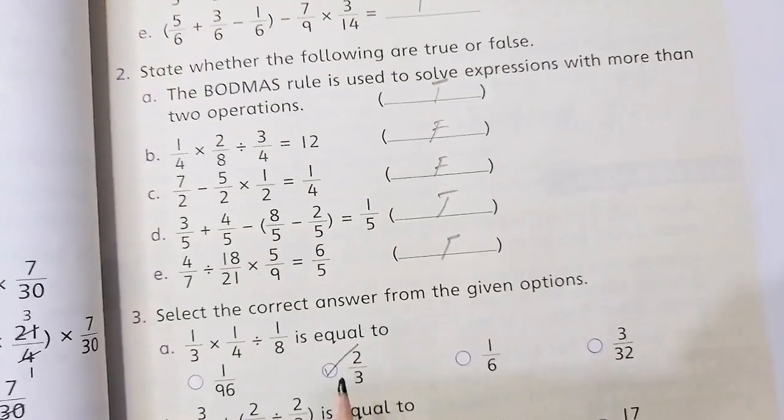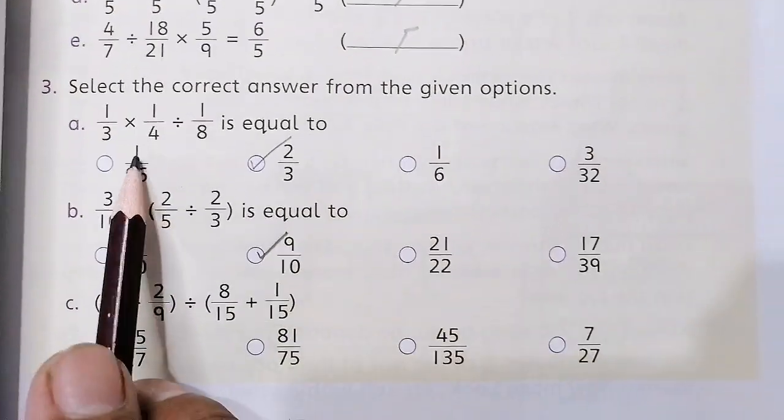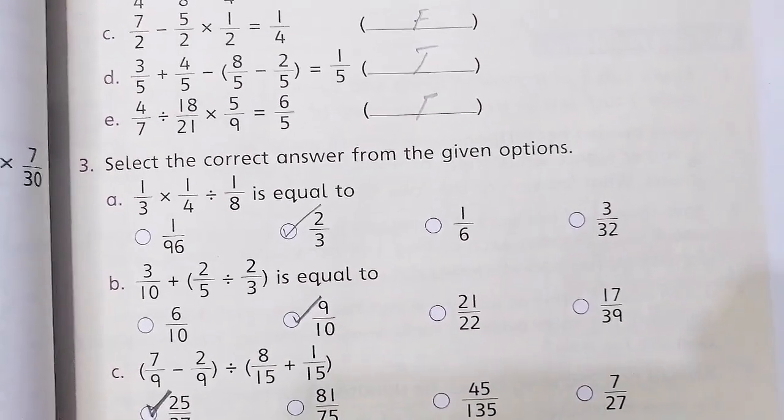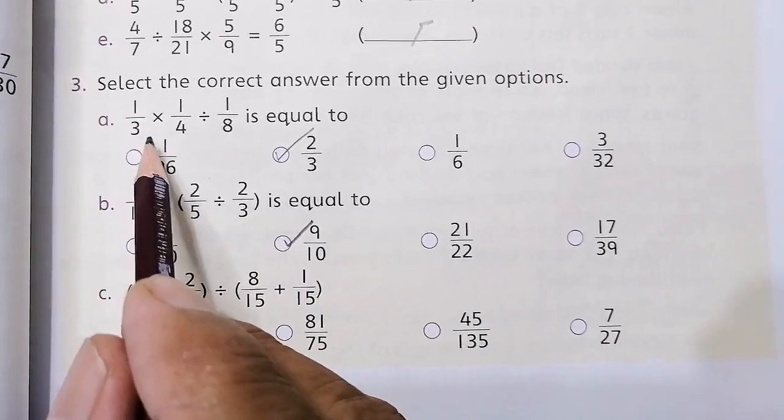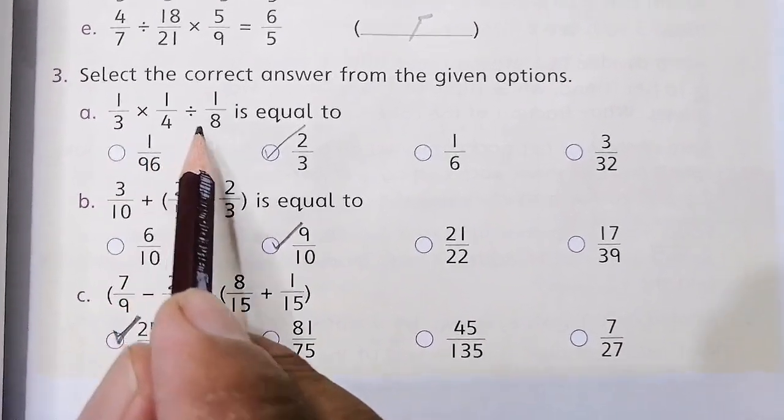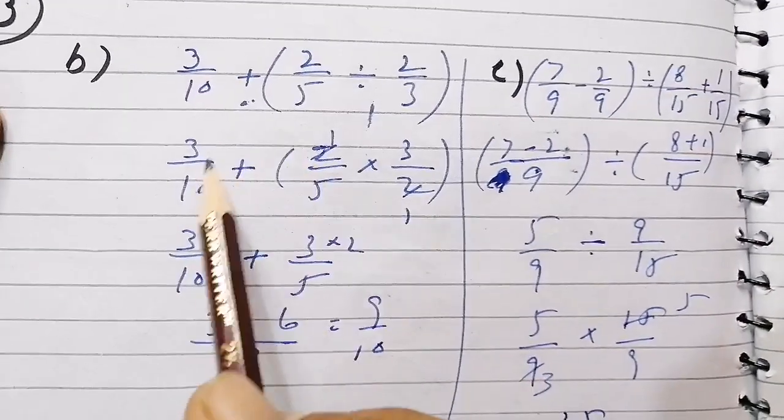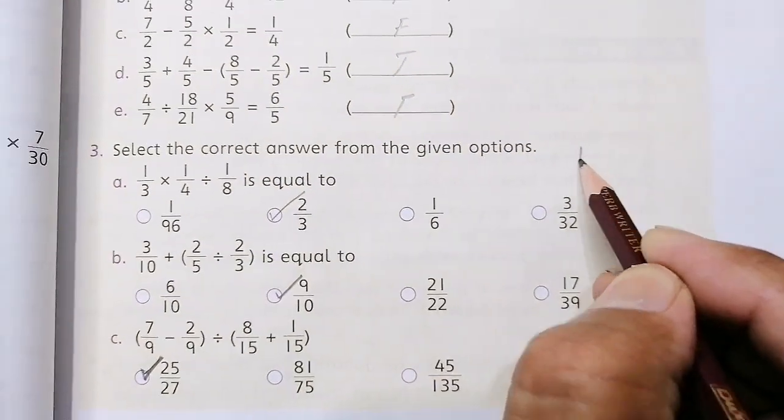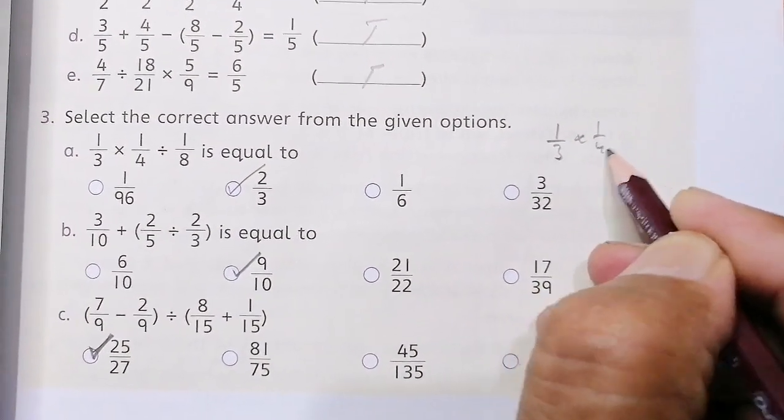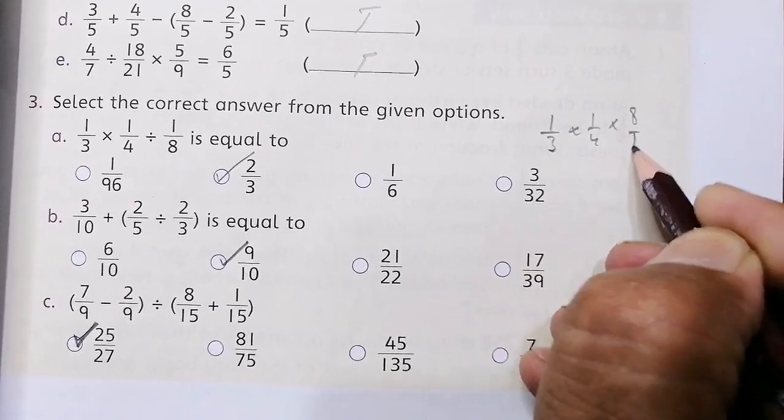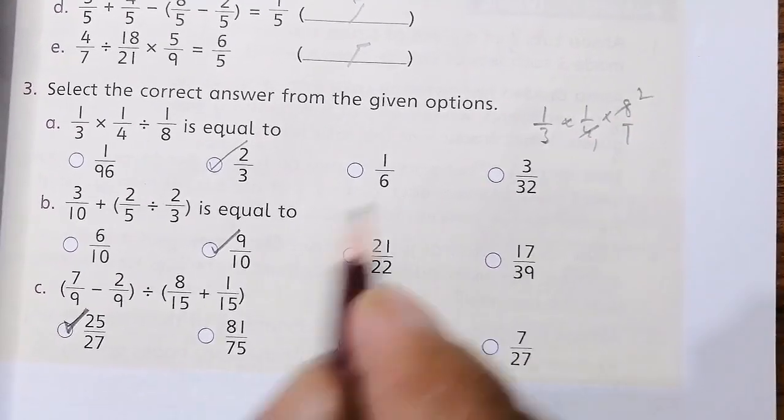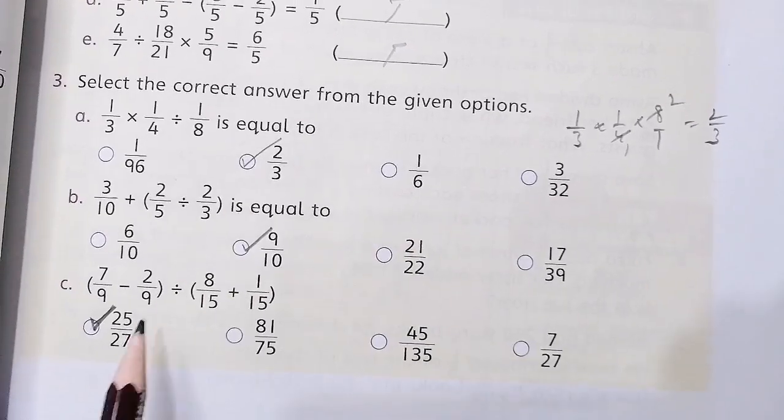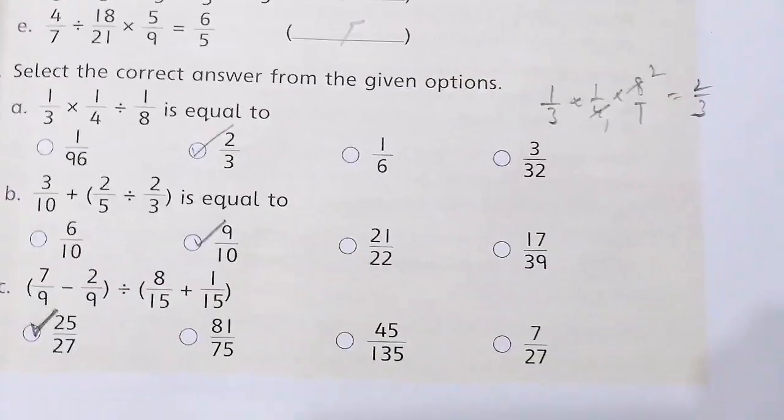Now you have to select the correct option. 1 over 3 multiply 1 over 4 divided by 1 over 8. So we have to solve it: 1 over 3 multiply 1 over 4 multiply 8 over 1, 4 into 1 is 4, 4 into 2 is 8, so the answer is 2 over 3. Similarly, B part I have solved: 9 over 10.